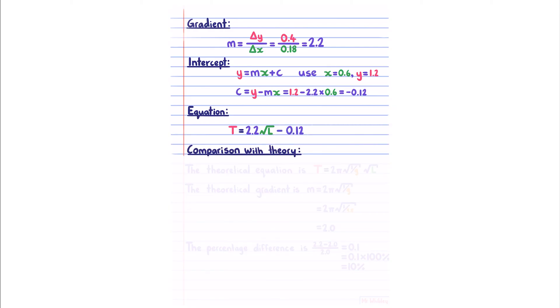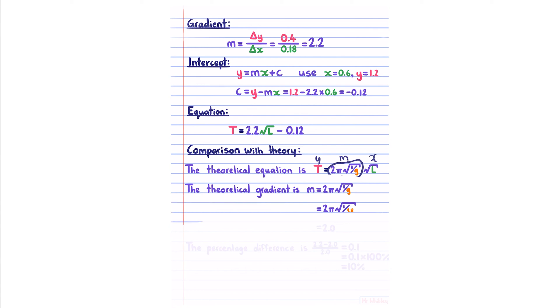For our comparison with theory, our theoretical equation is this one here, which in the assessment would be given to you. Our theoretical gradient, noting that y is equal to mx, and so that this must be our m. Substituting in the known value for the gravitational acceleration, which is 9.8, that gives us a theoretical gradient of 2. Our percentage difference is our experimental minus our theoretical, divided by our theoretical, which gives us 0.1, which is equal to 10%.